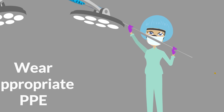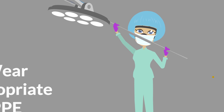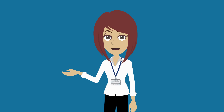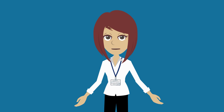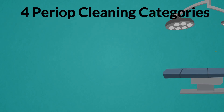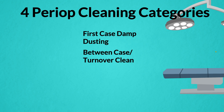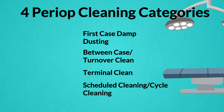There are four different cleaning categories in perioperative areas: first case damp dusting, between case turnover clean, terminal clean, and scheduled or cycle cleaning. Part 1 of this video series covers first case damp dusting and between case turnover clean. Part 2 covers terminal cleaning and scheduled or cycle cleaning.